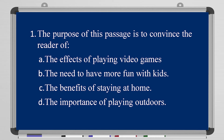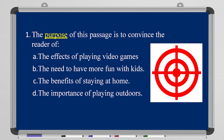Question number one: the purpose of the passage is to convince the reader of — is it the effects of playing video games, the need to have more fun with kids, the benefits of staying home, or the importance of playing outdoors? If you read the text well, you will know the answer is D — the importance of playing outdoors.